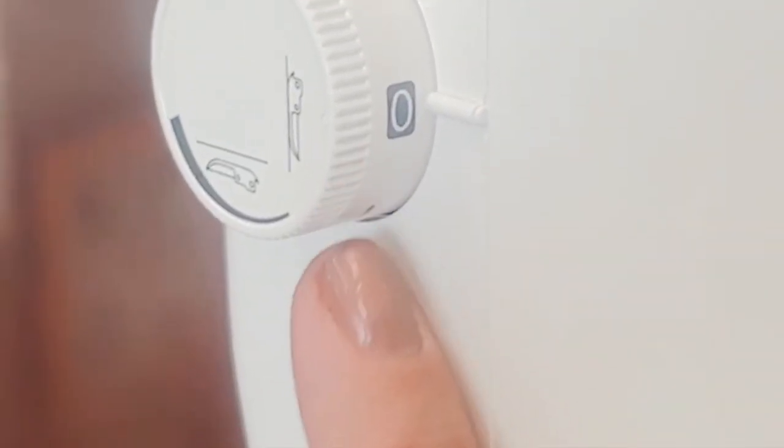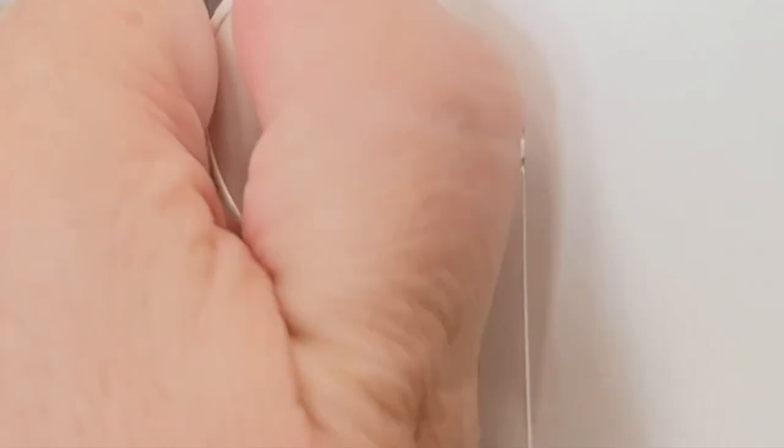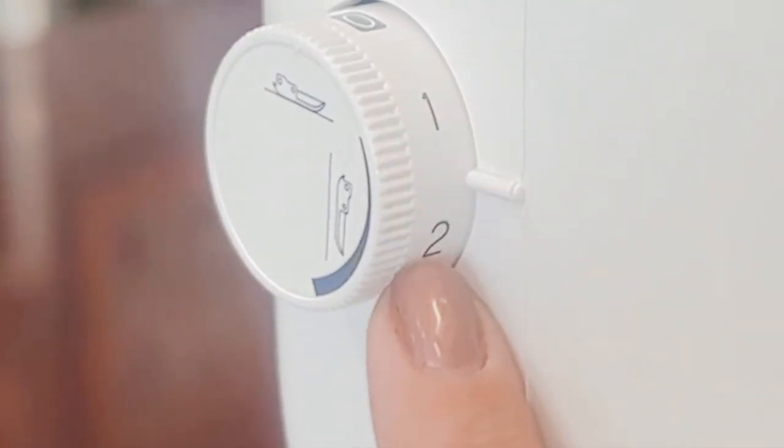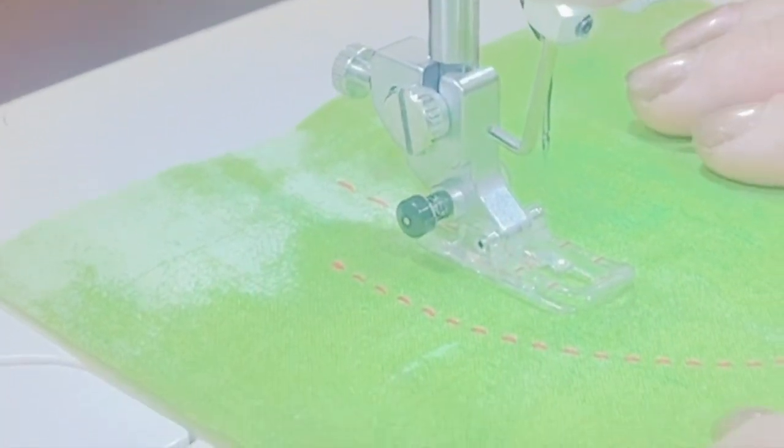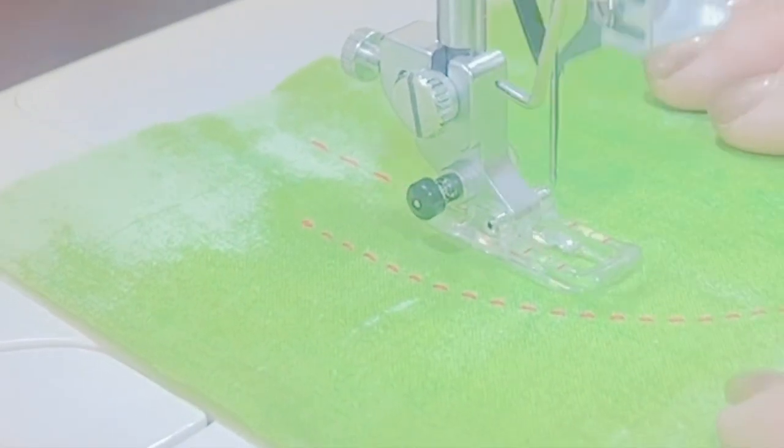So if I want to do curves, this is where I'm going to adjust the presser foot height and I'm going to take it up to maybe a 1.5. I could go between maybe 1.5 or a 2.